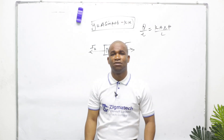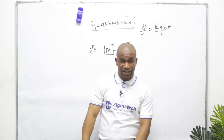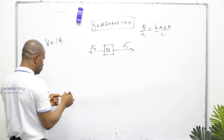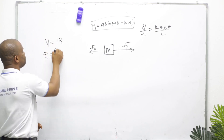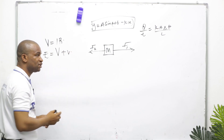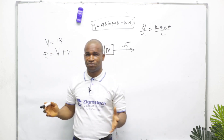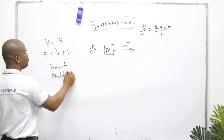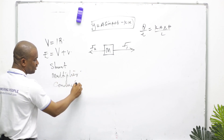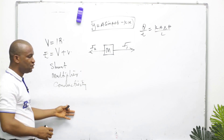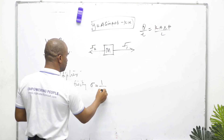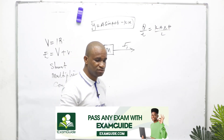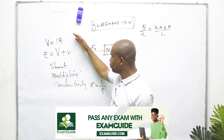Number thirteen is current electricity and electric fields. We cover Ohm's law, the formula EMF equals terminal PD plus lost voltage, arrangement of resistors, shunt and multiplier, conductivity (which equals 1 over resistivity), resistivity, the potentiometer, the Wheatstone bridge, and the meter bridge. You need to be very well acquainted with all of these.